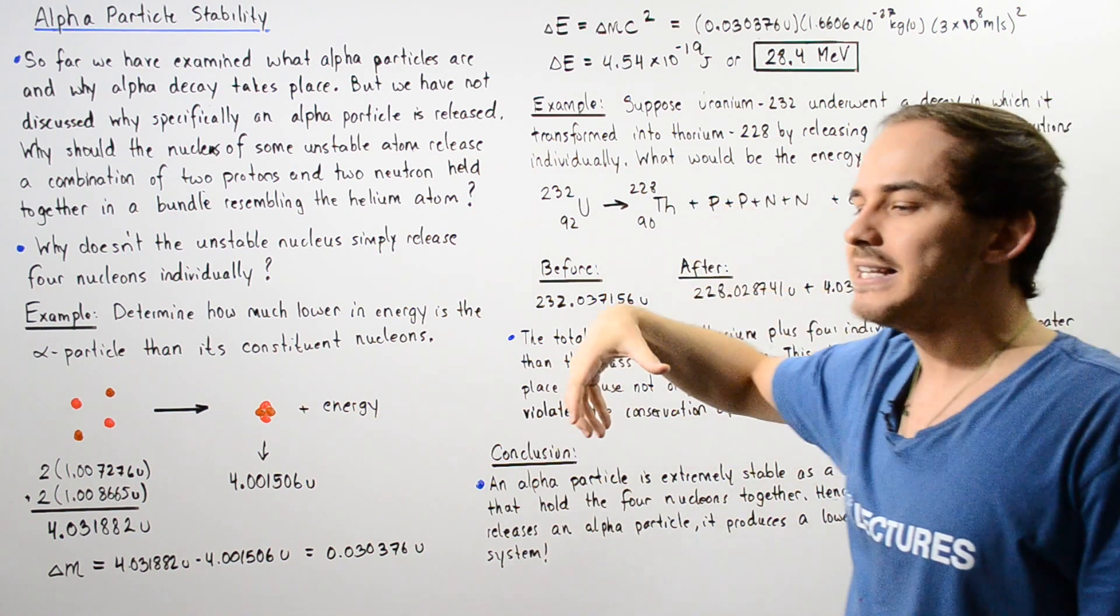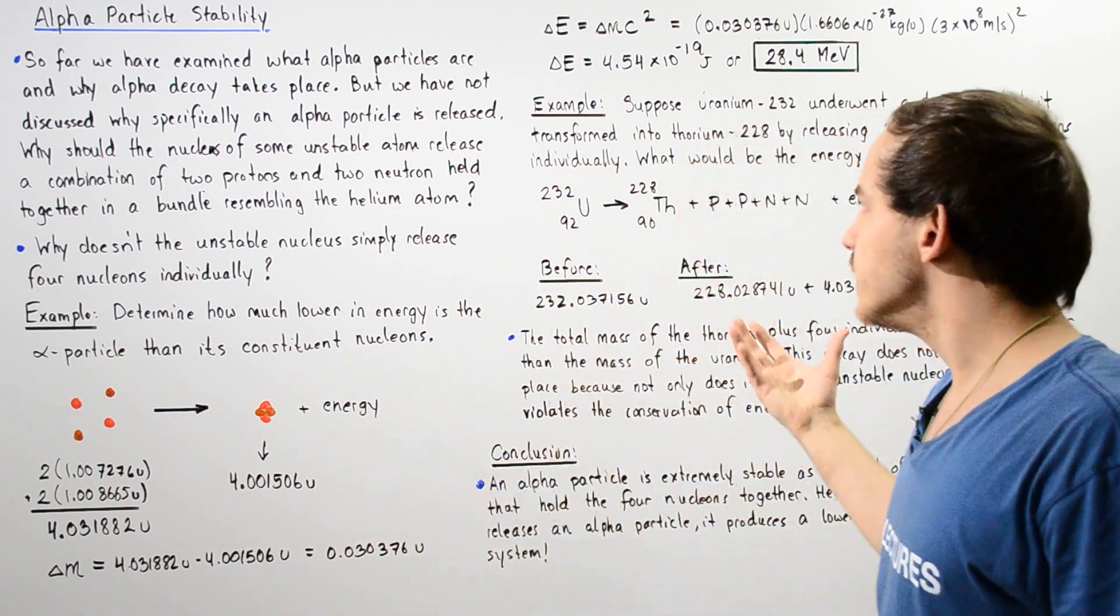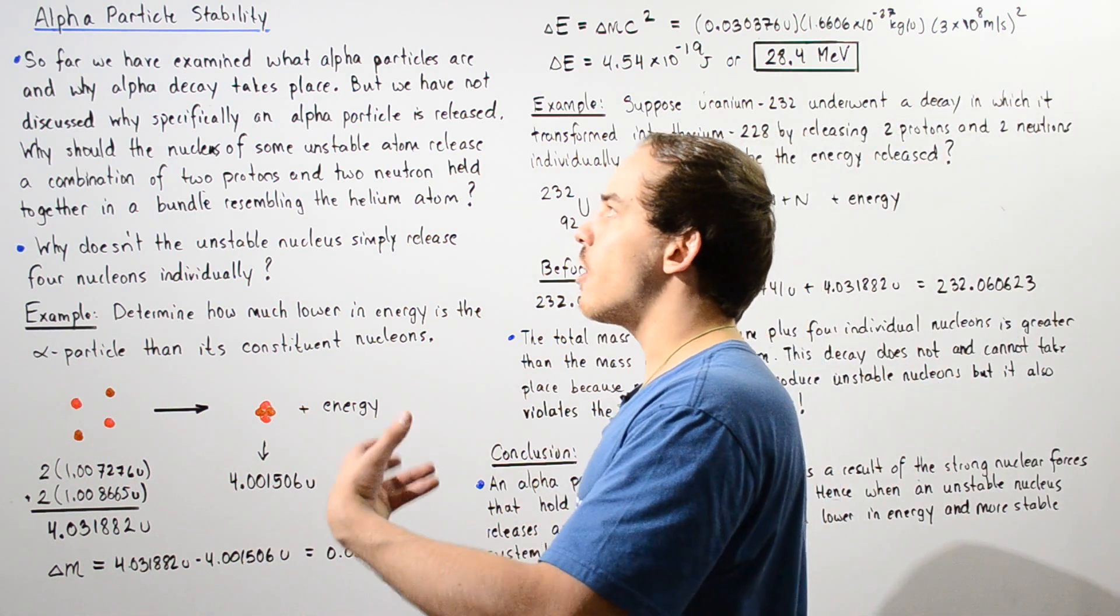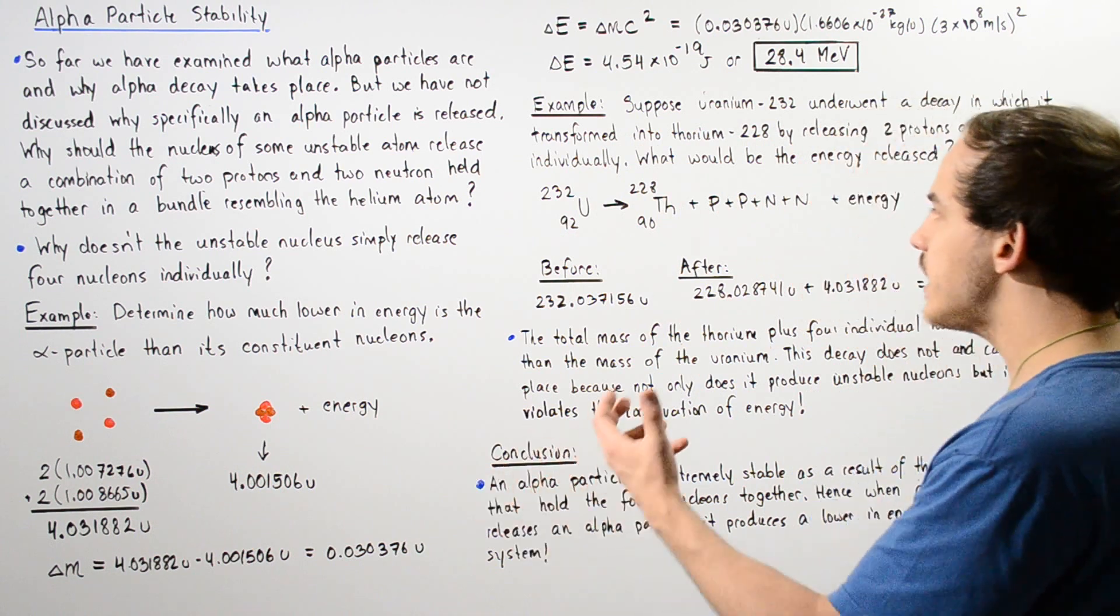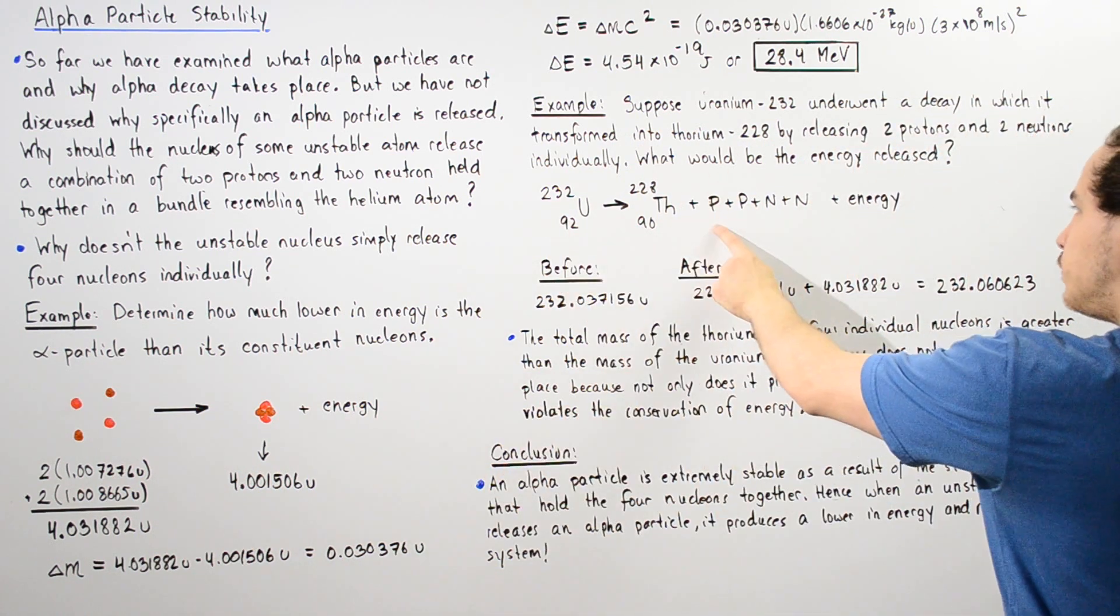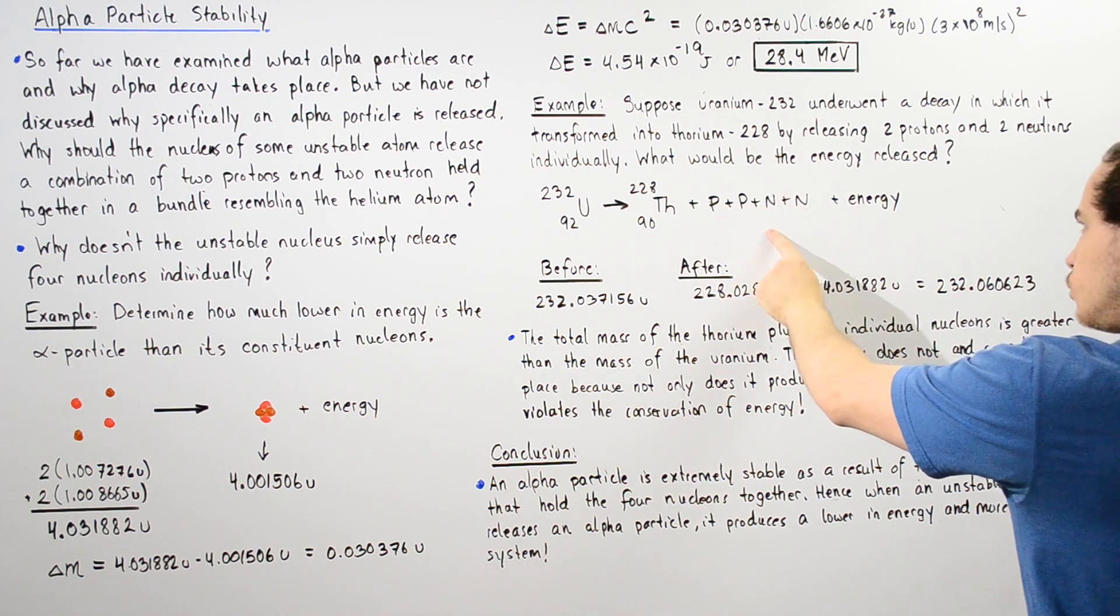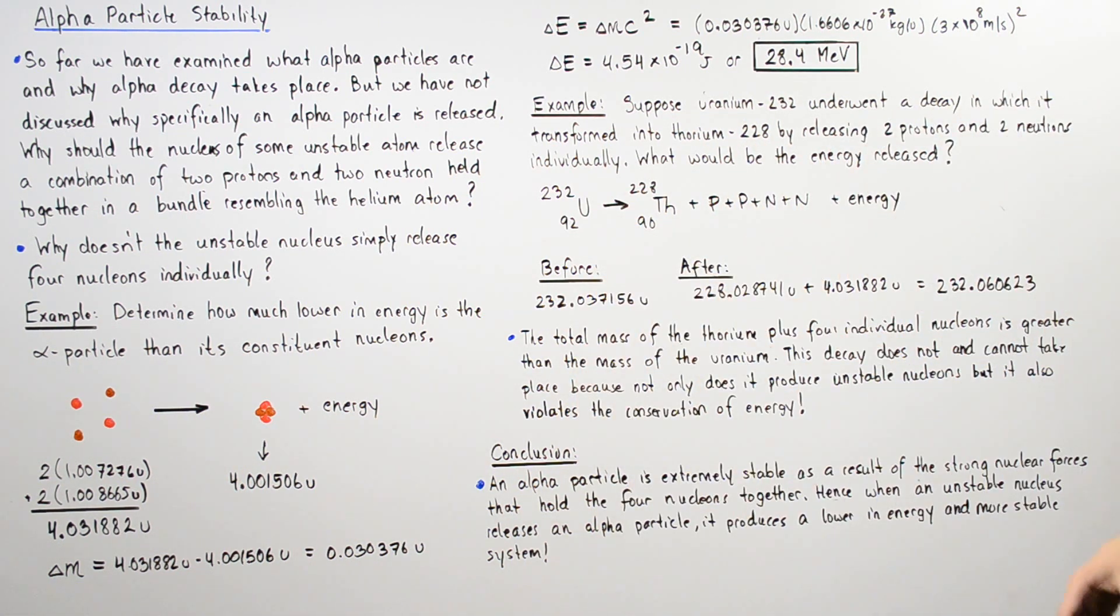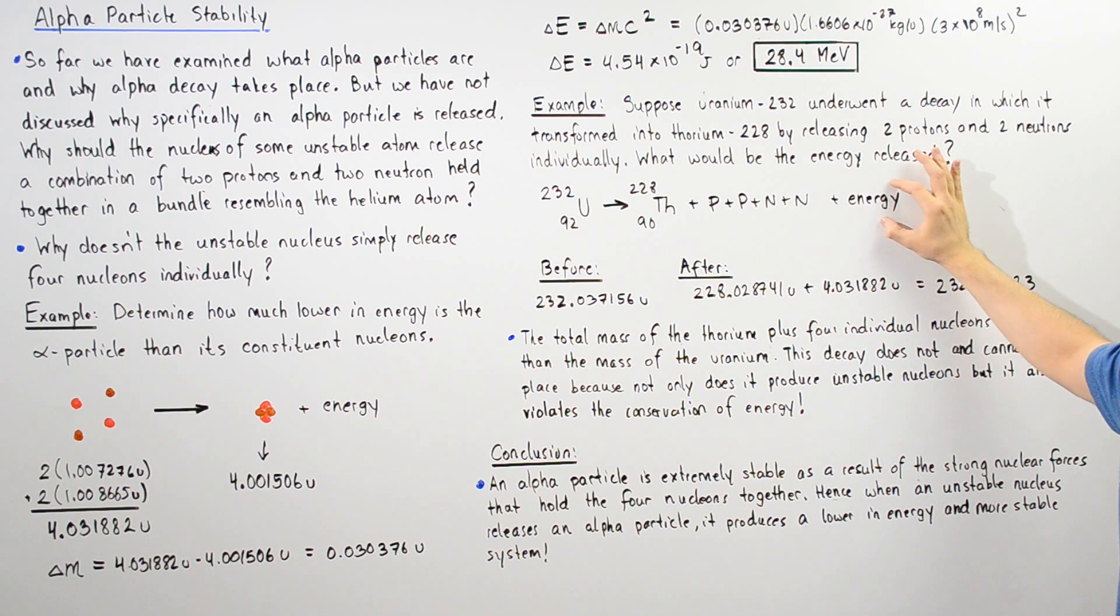So, suppose Uranium-232 underwent an alpha decay or a decay in which it transformed into Thorium-228 by releasing two protons and two neutrons individually. So now, we're assuming the alpha decay doesn't take place. We have a radioactive decay in which our Uranium simply releases one proton, one proton, one neutron, one neutron, and forms our Thorium atom. And we want to ask ourselves, is energy actually released? And if so, how much energy?